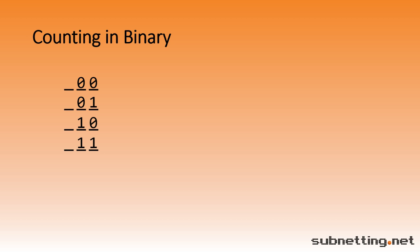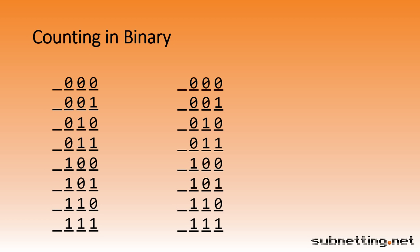If we have three bits, we double again, which gives us eight possible values. We duplicate the first two bits, then put zeros in front of the first set, and ones in front of the second set. Let's do it one more time. With four bits, we double again, and now we have 16 possible values. We duplicated the three bits, then add zeros in front of the first set, and ones in front of the second set.